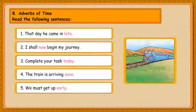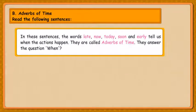In these sentences, the words late, now, today, soon and early tell us when the actions happen. They are called adverbs of time. They answer the question: When?